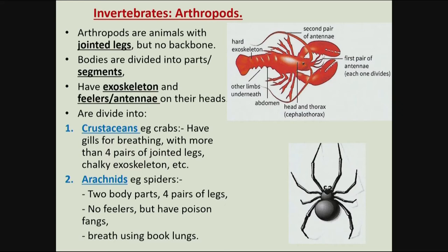The next group are the arachnids — spiders and scorpions. Their bodies are divided into two parts: the head and thorax are connected together to form what is called a cephalothorax. So they have only two body parts: the cephalothorax and the abdomen. They have four pairs of legs, or eight legs, they have no antennae, but they have poisonous fangs which they use to disable their prey, and they breathe using book lungs.